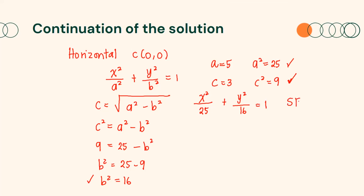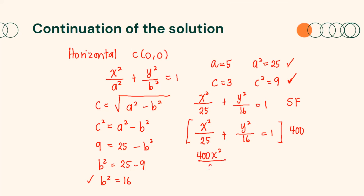This is the equation of the ellipse in standard form. Writing this equation in general form, we need to multiply the whole equation by the least common denominator. The least common denominator of 25 and 16 is 400. Therefore, we will have 400x² over 25 plus 400y² over 16 equals 400.